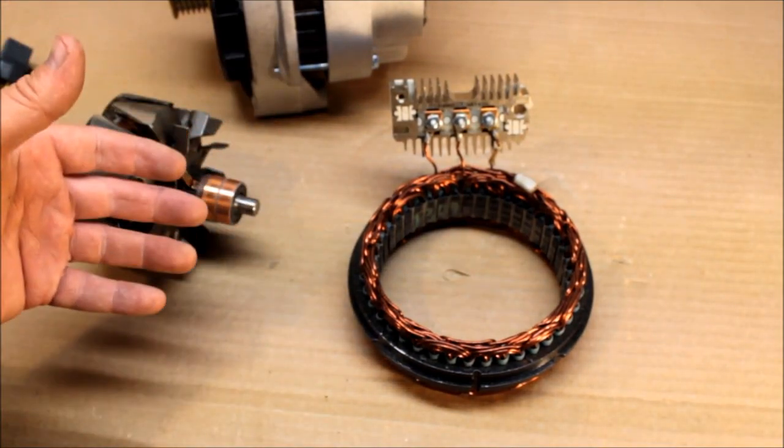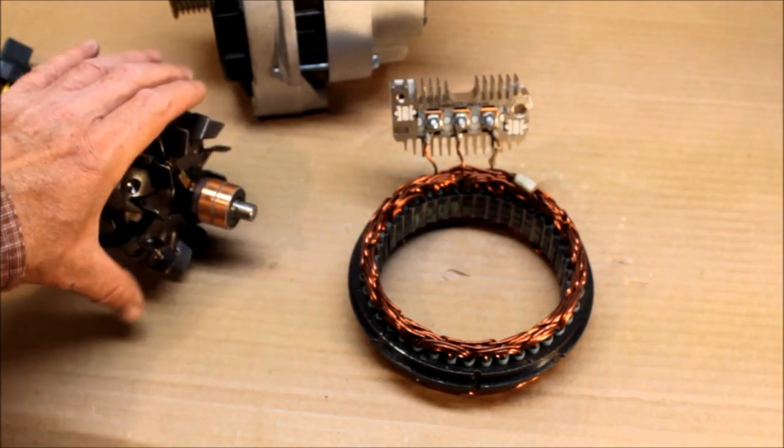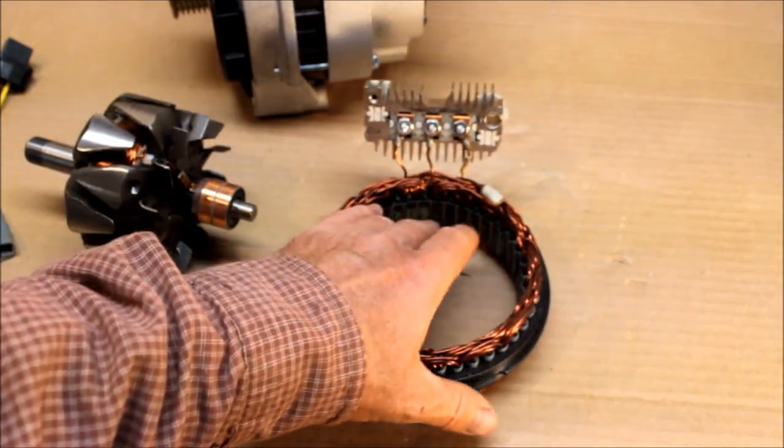When the battery fills up and the voltage regulator sees that the battery's filled up, it cuts back power to this rotor, making it a small electromagnet, toning it down. So when the small electromagnet spins inside of the stator, it makes very little power out to the rectifier.